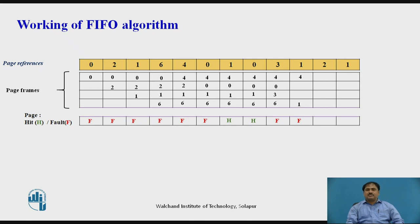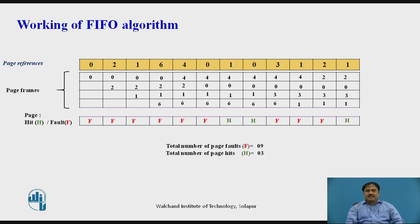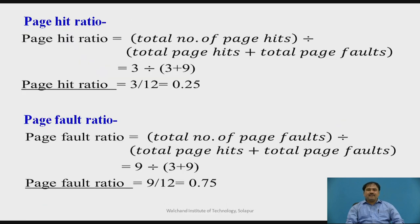This process continues until all required pages have been transferred into the main memory. The entire chart shows the process of bringing required pages from secondary memory into the main memory using the FIFO principle. In this example, we encounter a total of 9 page faults and 3 page hits. The page hit ratio — total page hits divided by the sum of total page hits and total page faults — comes to 0.25, and the page fault ratio comes to 0.75.